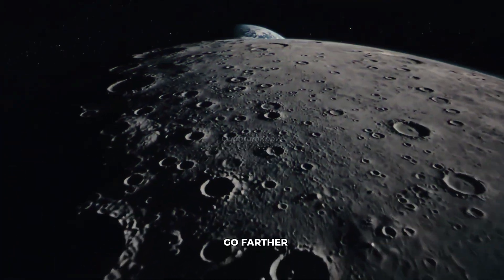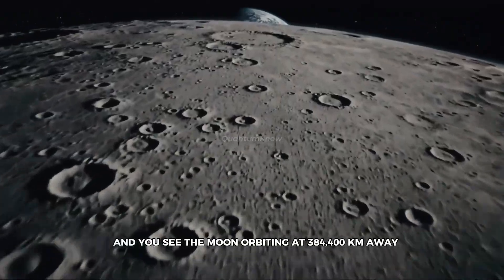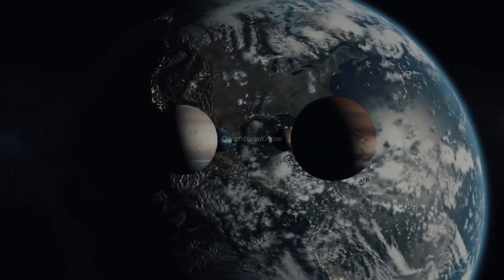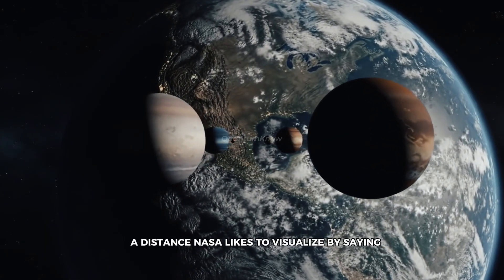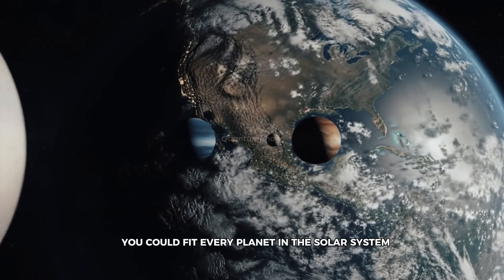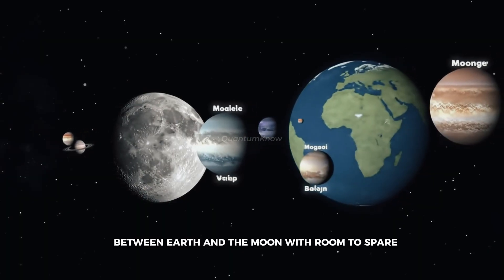Go farther, and you see the Moon, orbiting at 384,400 kilometers away. A distance NASA likes to visualize by saying, you could fit every planet in the solar system between Earth and the Moon, with room to spare.